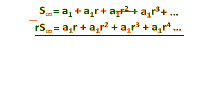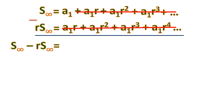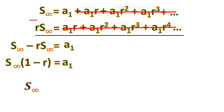When we subtract the two equations, all the middle terms — starting from a sub 1 times r — are exactly the same and cancel out. What remains is: S sub infinity minus r times S sub infinity equals a sub 1. We factor out S sub infinity to get S sub infinity times (1 minus r) equals a sub 1, then divide both sides by 1 minus r.